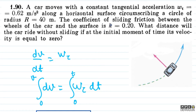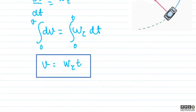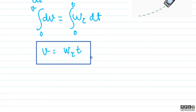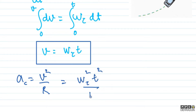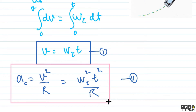अब देखिए बच्चों, centripetal acceleration हम लोग कितना हो सकता है — वो तो है v²/R। तो वो कितना हो जाएगा? यहाँ से w_τ² × t² divided by R आ रहा है। तो एक equation यह आई। और दूसरी equation हमारे पास यह है कि tangential acceleration वो कितना है — वो w_τ² है। यह clear है यह बात।